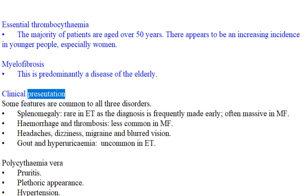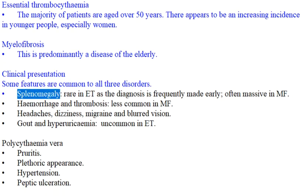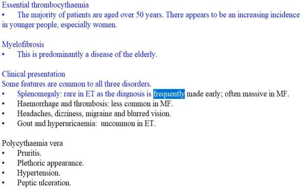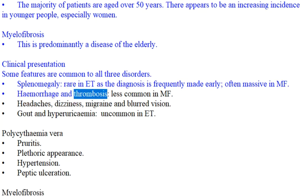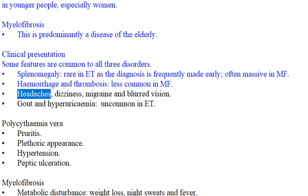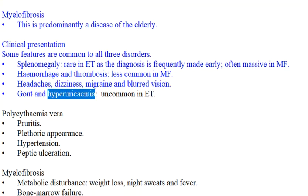Clinical presentation: Some features are common to all three disorders. Splenomegaly — rare in ET as the diagnosis is frequently made early, often massive in MF. Hemorrhage and thrombosis — less common in MF. Headaches, dizziness, migraine, and blurred vision.